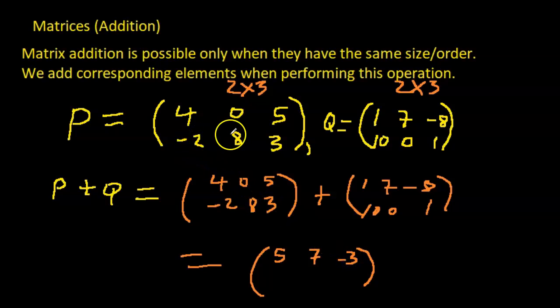5 corresponds with -8, so 5 plus -8, that's -3. Negative 2 corresponds with 10, so -2 plus 10, that's 8. 8 corresponds with 0, so 8 plus 0, that's 8 also. And this 3 here corresponds with 1, so 3 plus 1, that's 4.